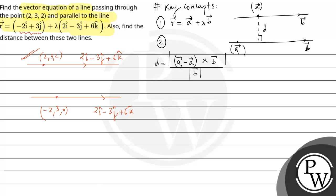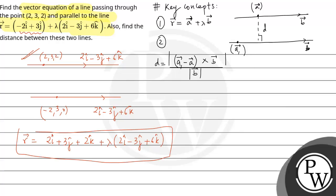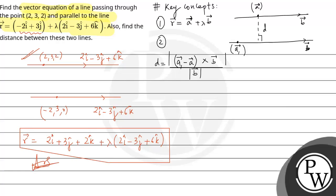So we can directly write the equation of the first line. r vector is equal to (2i cap + 3j cap + 2k cap) + λ times (2i cap − 3j cap + 6k cap). That's one answer done.